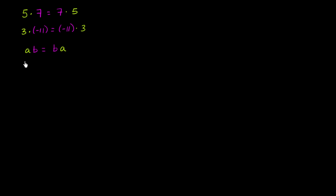What I want to do in this video is think about whether this property of commutativity — the commutative property of multiplication of scalars — has a similar property for the multiplication of matrices. Whether it's the case that if I had matrix A and matrix B, the product AB is always the same as the product BA, just swapping the order.